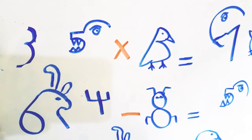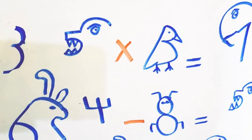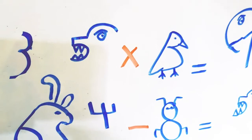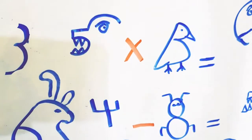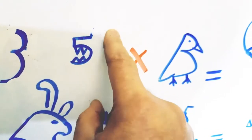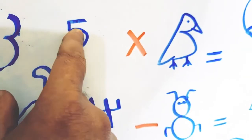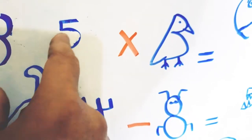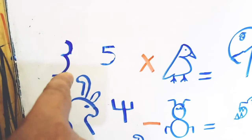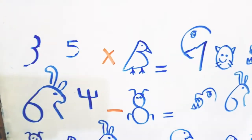We will clear out some parts of the drawings before us in order to reach the specific digit we are searching for. We will clear out this part — so we have five. Now we have 35. 35 times... what? We have a bird.